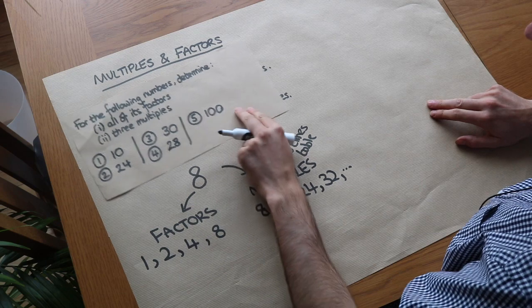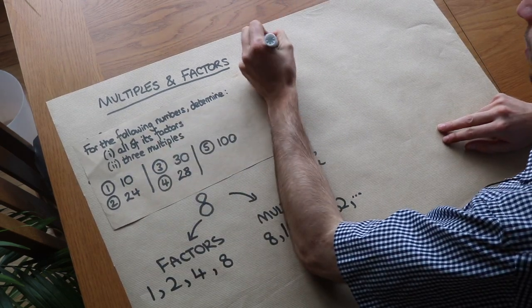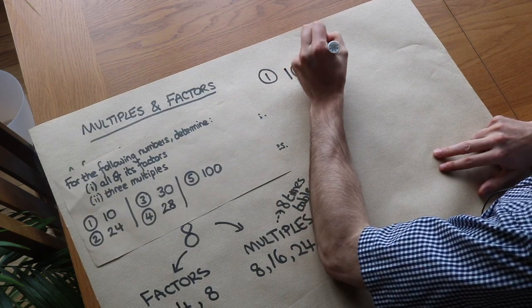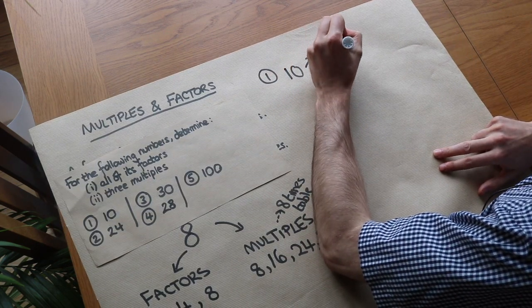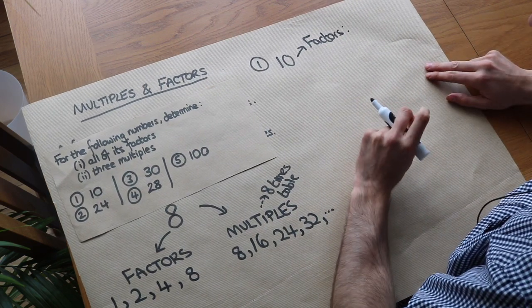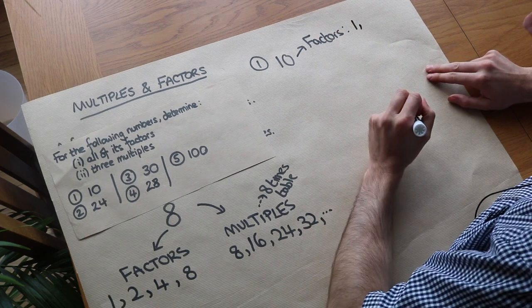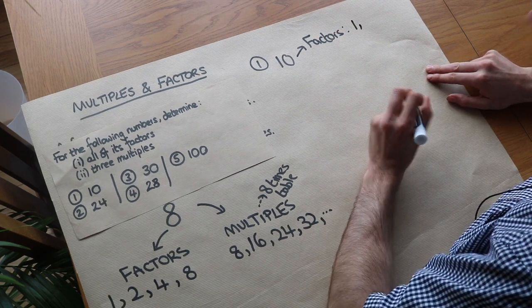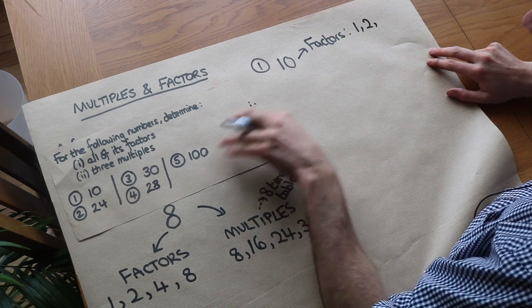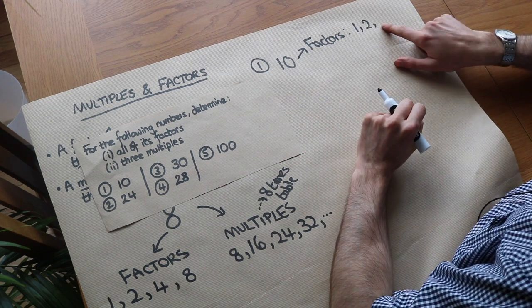Let's practice finding the multiples and factors of different numbers. First, the number 10. Let's find the factors — numbers that go into it. Starting from 1 and working upwards: does 1 go into 10? Yes, we can divide 10 by 1 to get a whole number. What about 2? Yes, 10 divided by 2 gives you 5. Does 10 divide by 3? No — 3 doesn't go into 10 a whole number of times, so that's not a factor.